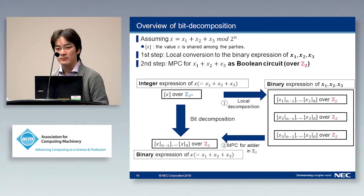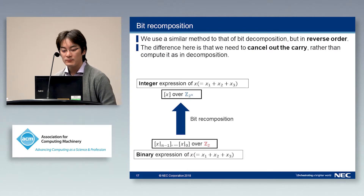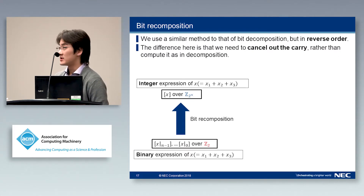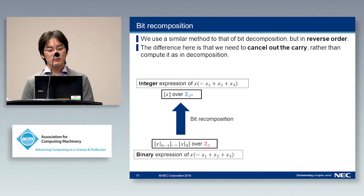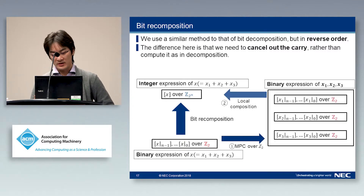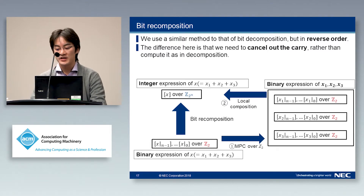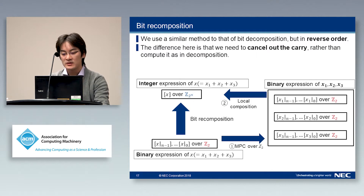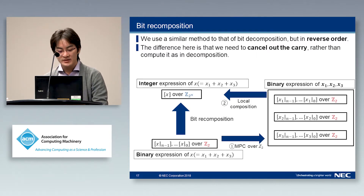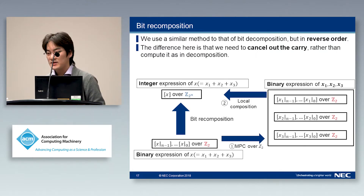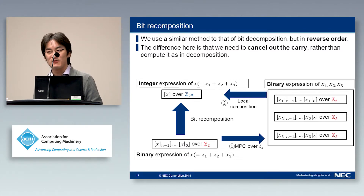This is the overview of our bit recomposition, which is Boolean-to-arithmetic conversion. We can use a similar method to bit decomposition but in reverse order. In this procedure, the parties perform MPC for carry bits of the addition — the same as in bit decomposition — but the difference is that we need to remove the carry bits from the decomposition. The carry bits in recomposition are evaluated and propagated so that they cancel out the carry bits from the decomposition. For more detailed procedures, please see our paper.